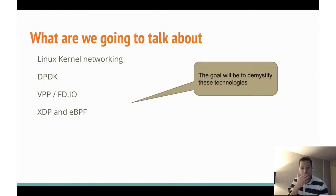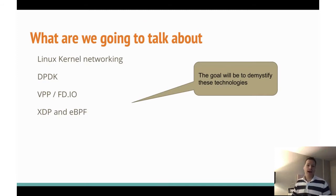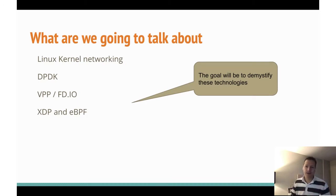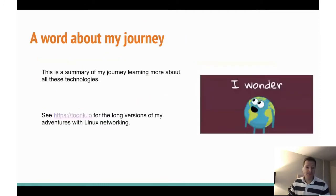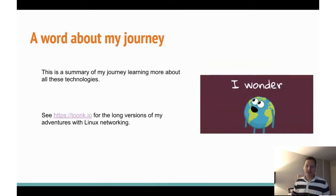So what are we going to talk about today? We're going to talk about Linux kernel networking, DPDK, VPP, XDP, and eBPF. These are all pretty big topics, and the goal is to demystify these technologies a little bit. This presentation is really a summary of about four blog posts that I did, which you can find on my website, tunk.io.